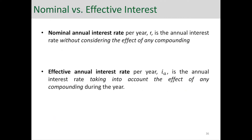Let's talk about nominal annual interest rate versus effective. Nominal annual interest rate, shown with R, is the annual interest rate without considering the effect of compounding. Effective annual interest rate, shown with I sub A, is the annual rate taking into account the effect of any compounding during the year. If compounding occurs within a year — every quarter, every month, every week, every day — then the effective and nominal interest rates would not be equal.